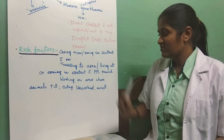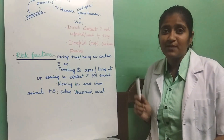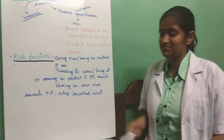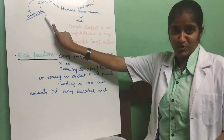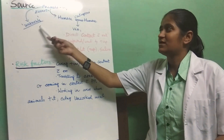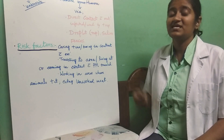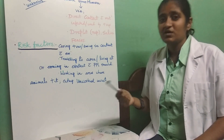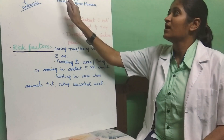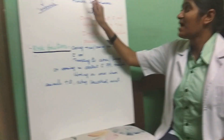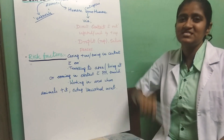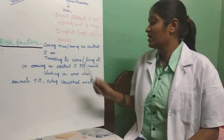Being in close contact in offices or workplaces with people who have recently traveled or have a travel history is also a risk factor for Corona Virus infection. Working in areas where animals are present — like farm places — is another risk, because the animal source is still unknown. Theories suggest it is a bat or another animal causing zoonotic transmission to humans, but this is still unconfirmed.